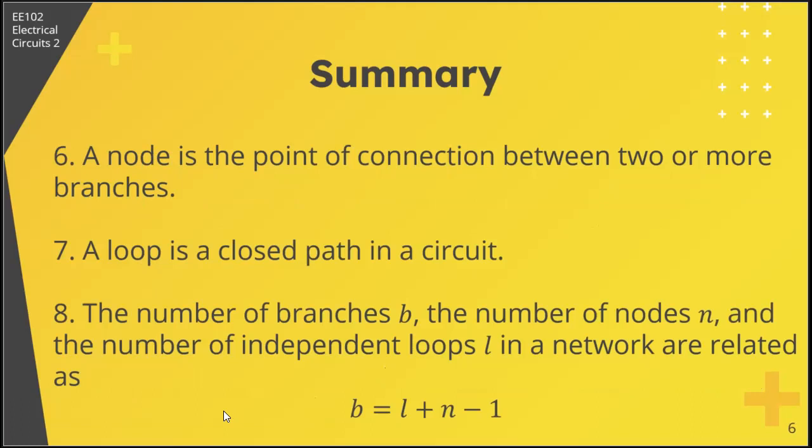Sixth, a node is the point of connection between two or more branches. Seventh, a loop is a closed path in a circuit. Eighth, the number of branches, the number of nodes, and the number of independent loops in a network are related as B equals L plus N minus 1.